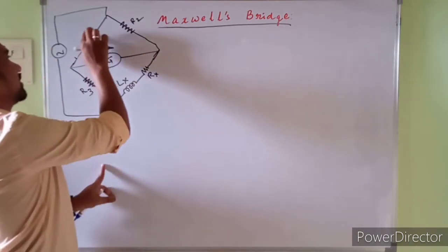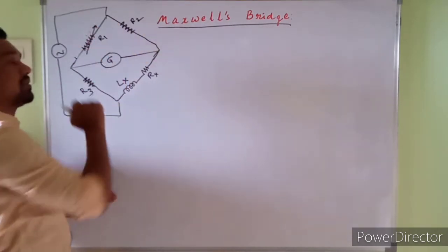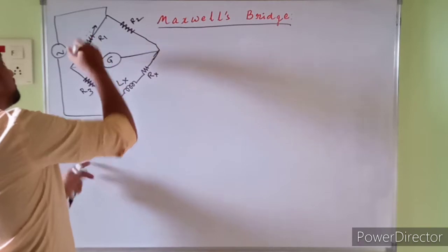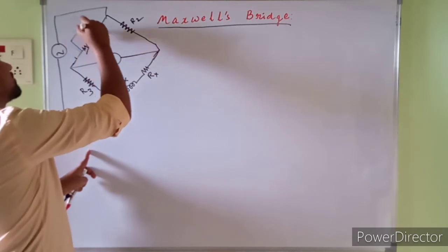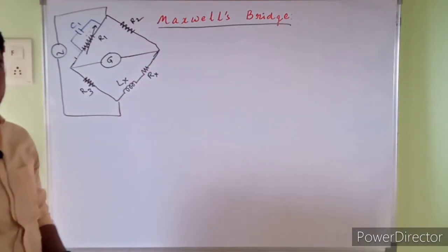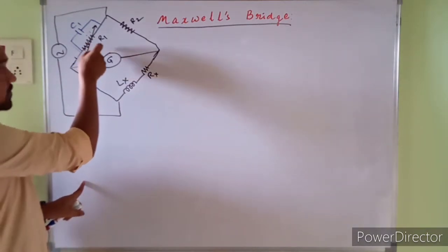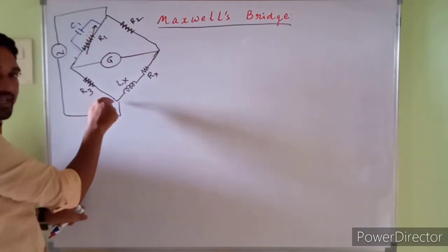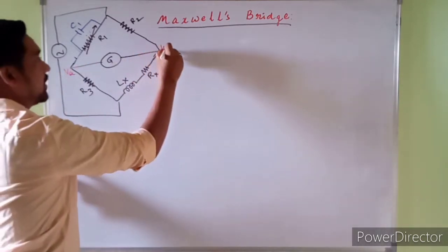Not only that — something else comes into the picture. We have R1, which is a variable resistance, and in this circuit I am introducing a capacitor in parallel with R1, given the name C1. This is the circuit for Maxwell's bridge. R1 is variable, and as we go on changing its value, at some point the bridge adjusts itself such that the voltage across points A and B — VA and VB — become equal.